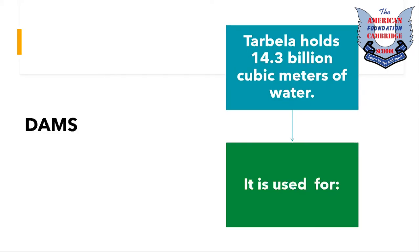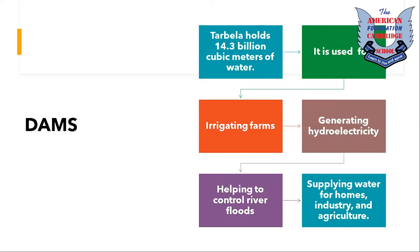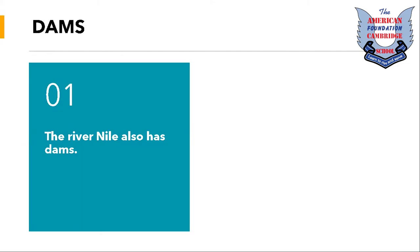Dams are used to generate electricity, control river floods by storing water, supply water for homes, industry and agriculture, and provide important habitats for plants and animals. The River Nile also has dams. The Aswan High Dam was built so that engineers could control the annual Nile floods by letting water through the dam when needed. It is located at the border between Egypt and Sudan.